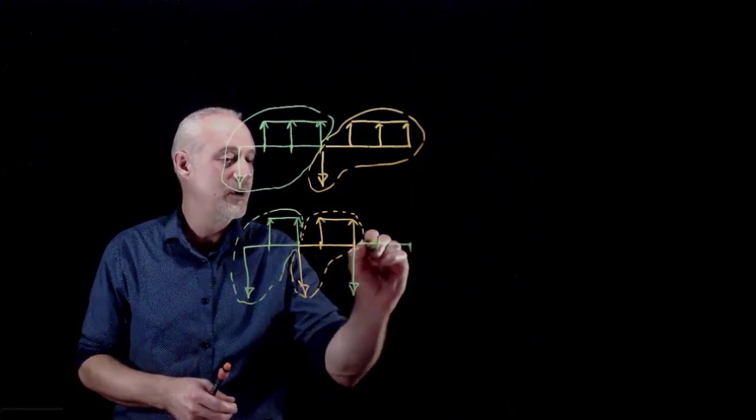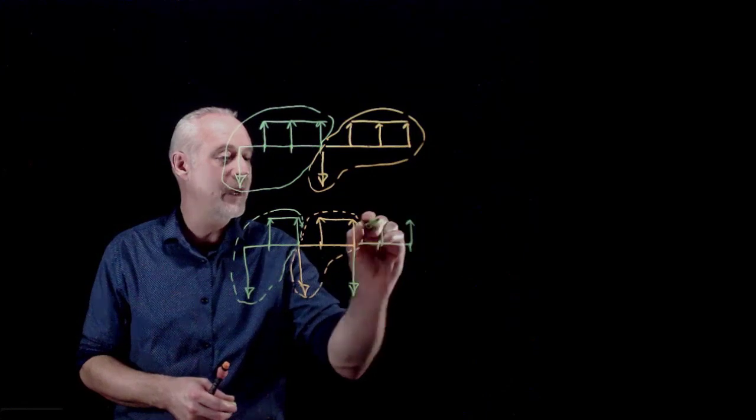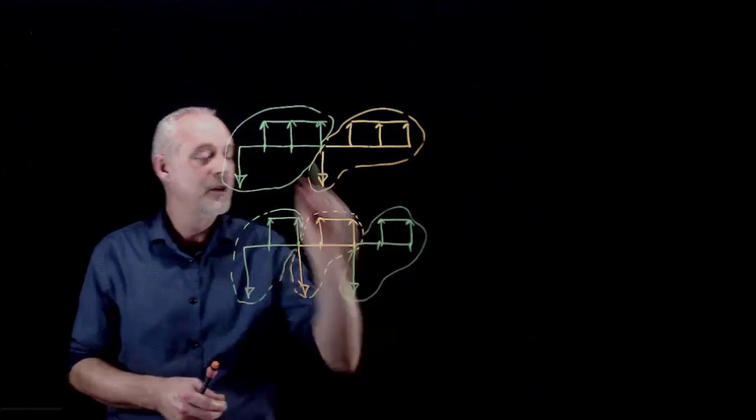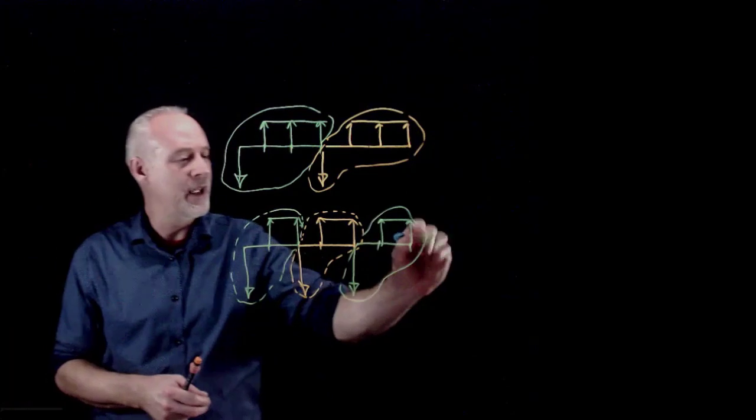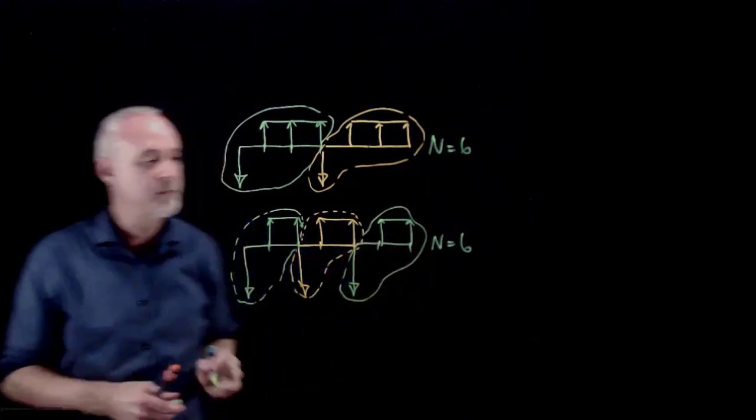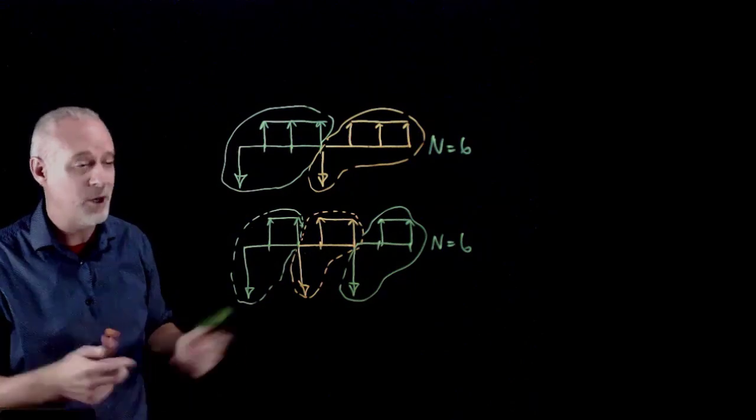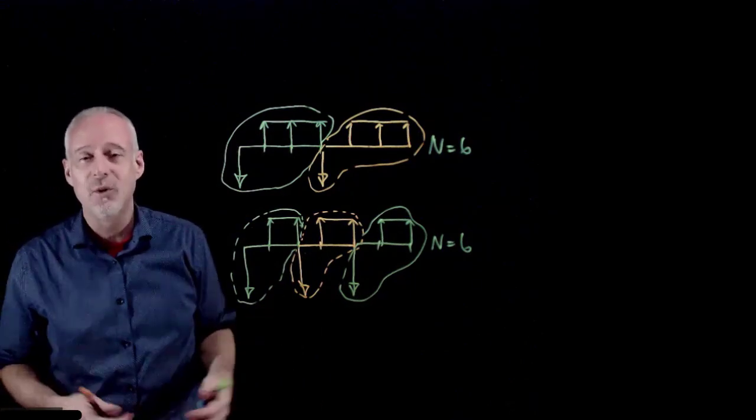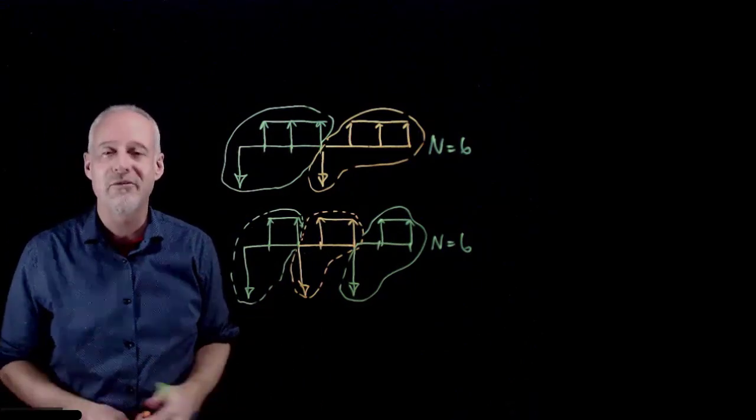And now they both have a six-year horizon. So here n equals six, and here n equals six. Well, it turns out this is, in fact, what you need to do to make it a fair comparison.